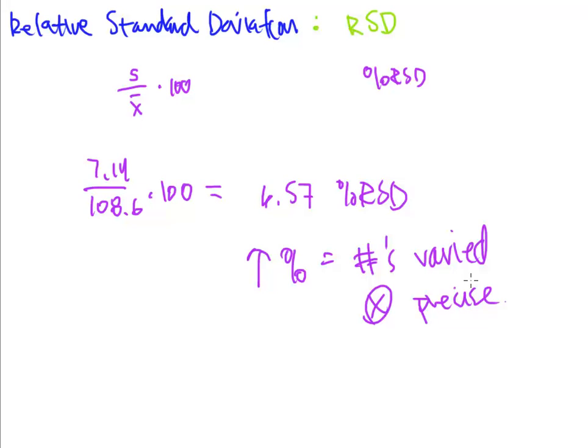If you have a standard deviation of 7.14 with numbers that have values of 1,223, 1,225, 1,227, that standard deviation means something a little bit different. So that's why we have relative standard deviation.